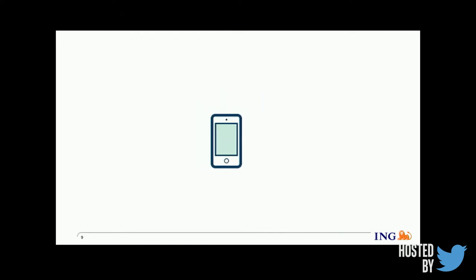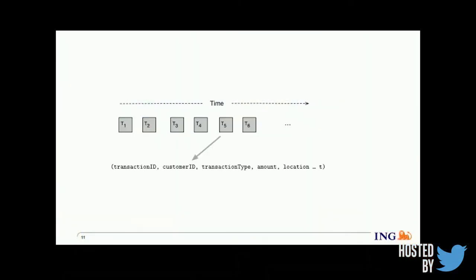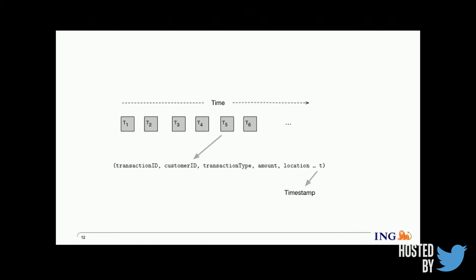We have large and growing volumes of data from different data sources, one of which is a real-time transaction stream. That brings us to the definition of what is a stream. A stream is an unbounded sequence of events which has several attributes — for instance, transaction ID, customer ID, transaction time, and also meta information such as a timestamp referring to when that event is actually happening.